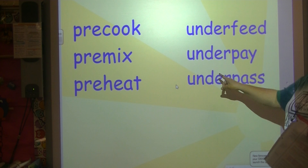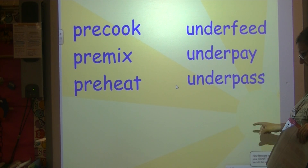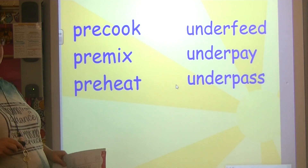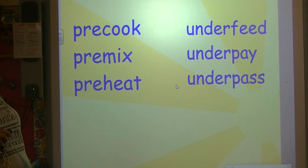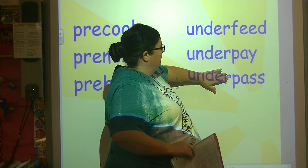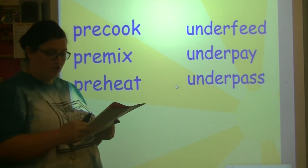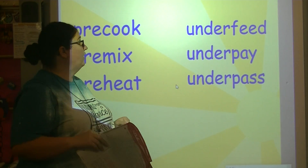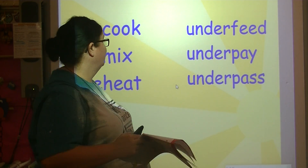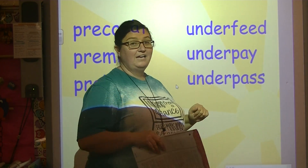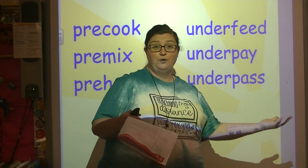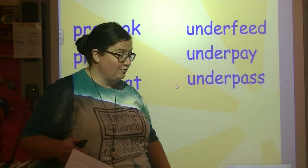Now let's look at two more prefixes. We have under-fed, under-pay, under-pass. What prefix do you see in these words? Under — because if we cover it up, we have feed, pay, and pass. Under means not enough or below. So if you underfeed something, you don't give them enough feed. If you underpay someone, you don't give them enough pay. An underpass is a place where you go below the road.